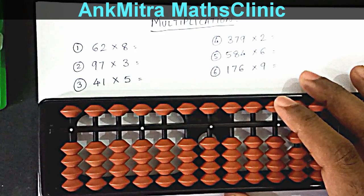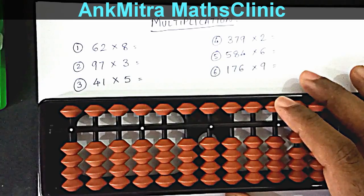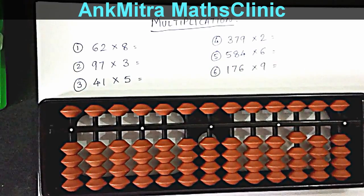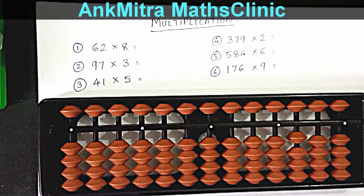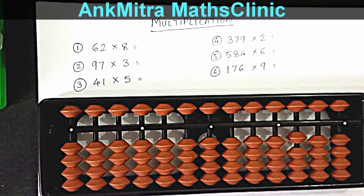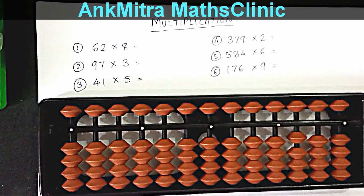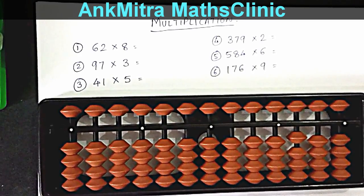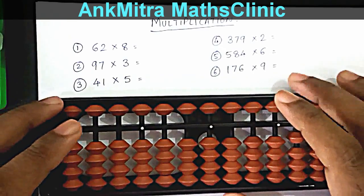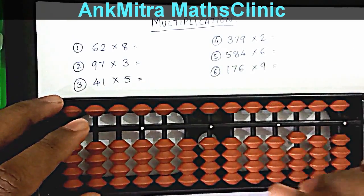Let's start with the first example: 62 multiplied by 8. As I mentioned in the previous video, a student before trying multiplication on abacus needs to be well prepared with all tables up to 9. We don't need two-digit number tables for this kind of multiplication on abacus.